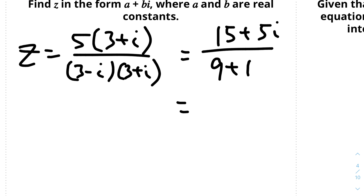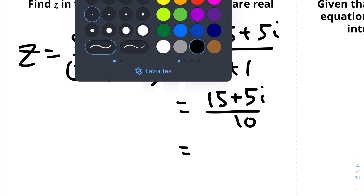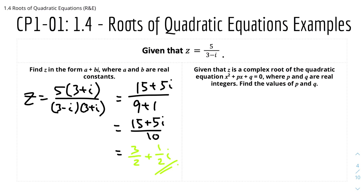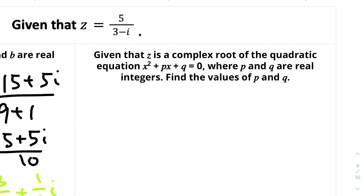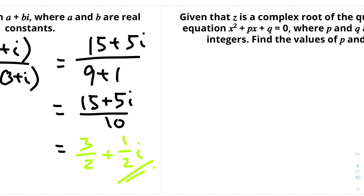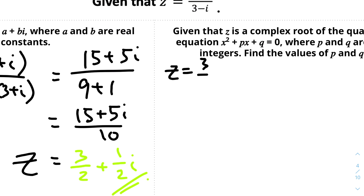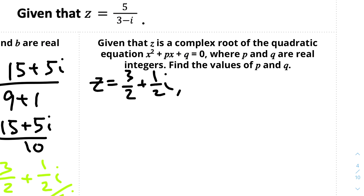So we simplify (15 + 5i) / 10. The real part is 15/10 = 3/2, and the imaginary part is 5/10 = 1/2. So z = 3/2 + 1/2 i. Given that z is the complex root of the quadratic equation x² + px + q = 0 where p and q are real integers, the other root must be the complex conjugate z* = 3/2 − 1/2 i, since complex roots occur in conjugate pairs.